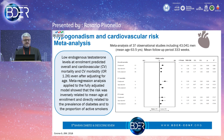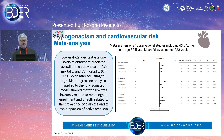Metabolic syndrome is clearly associated with cardiovascular risk. A meta-analysis of 37 observational studies including a large number of men demonstrated that low endogenous testosterone levels at enrollment predict overall and cardiovascular mortality and morbidity, even after adjusting for age. The meta-regression showed that risk was inversely related to mean age at enrollment and directly related to the prevalence of diabetes.